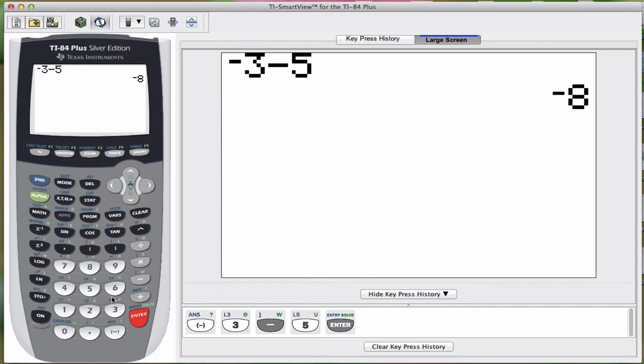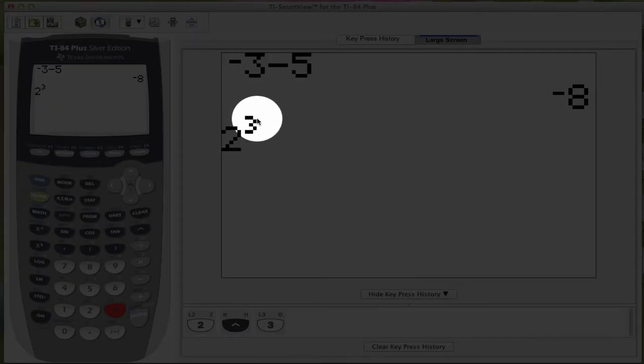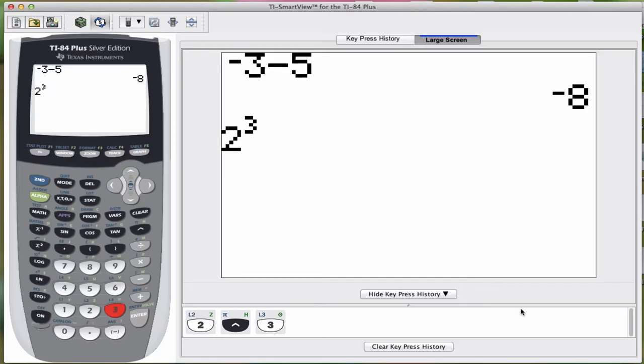The next thing I want to talk about are exponents. I know most of you guys know that this caret button represents exponents. And so if I was doing 2 cubed, I would press 2 caret 3. And I want to point out that mine, and some of you guys will do this, it actually makes it into an exponent. For others of you, it will just show 2 and then the caret sign and a 3, and that's fine. It will give us 8 regardless of the way that we input it into our calculator.